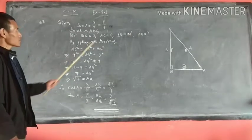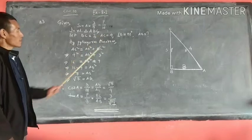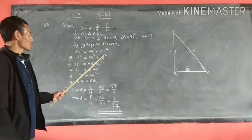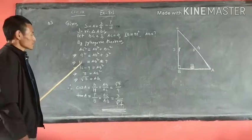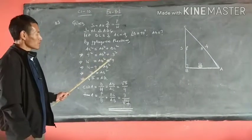So here, AC is 4, 4 squared, and BC is 3 squared. So 4 times 4 is 16, and 3 times 3 is 9.